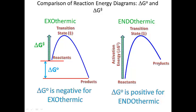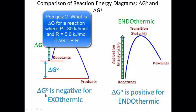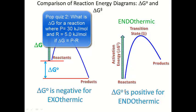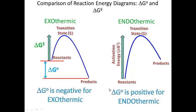For an endothermic reaction, the products are higher in energy than the reactants, so subtracting the energy of reactants from products gives a positive number. A reaction that's endothermic has a positive Gibbs free energy, or positive delta G naught. To summarize: exothermic reactions have a much lower activation energy than endothermic reactions, and exothermic reactions have a negative Gibbs free energy, or negative delta G, whereas endothermic reactions have a positive delta G.